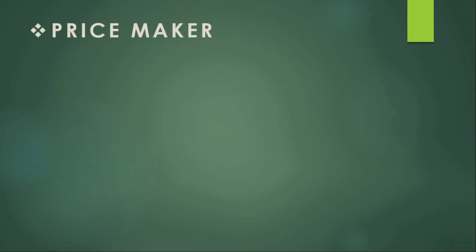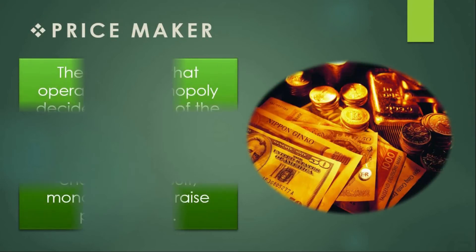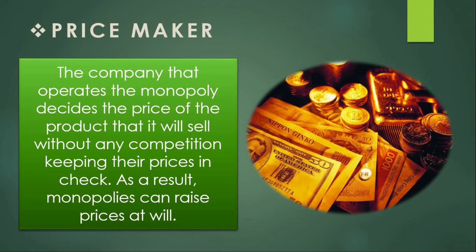The third feature is that the monopolist is a price maker. The monopolist can influence either the price or the quantity of output. In a perfectly competitive market, the firm takes the price as given and adjusts only the level of output. But in the case of monopoly, this is totally different — the company operating the monopoly decides the price of the product it will sell, without any type of competition keeping its price in check.